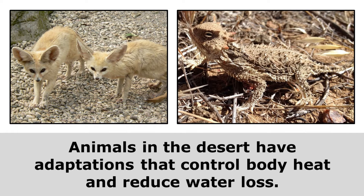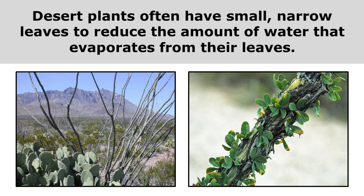This lizard actually produces solid uric acid instead of urine to conserve water. Desert plants often have small, narrow leaves to reduce the amount of water that evaporates from their leaves.